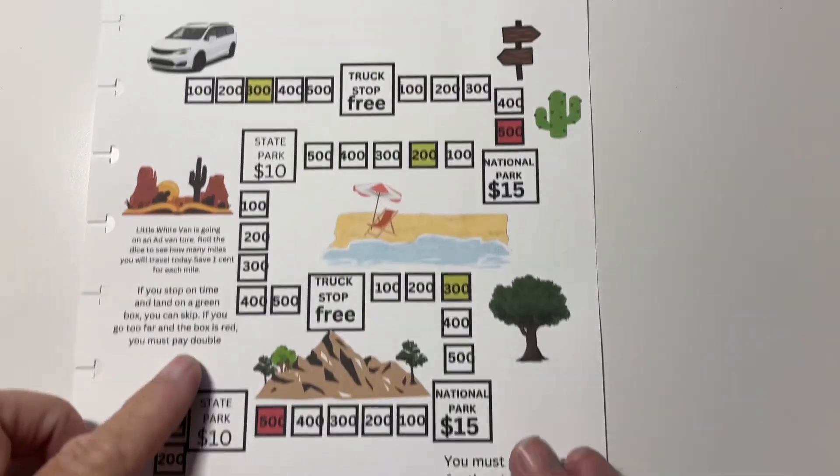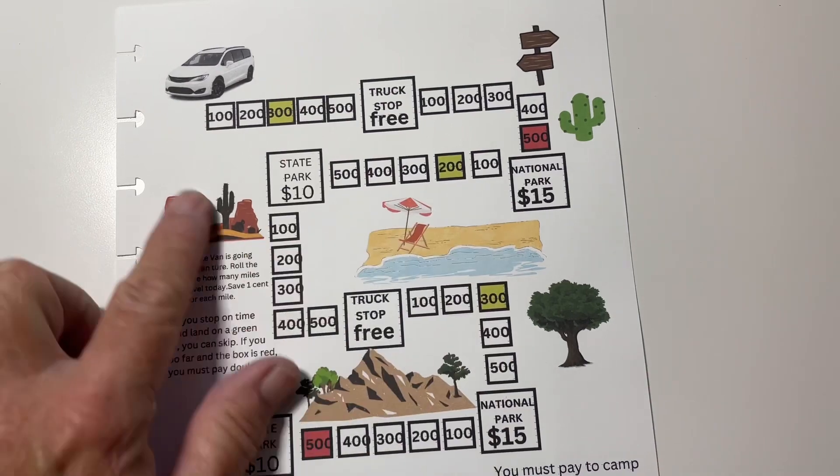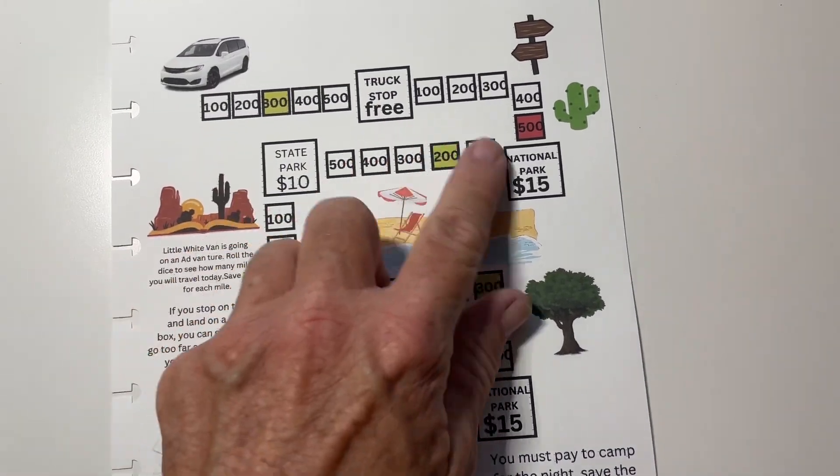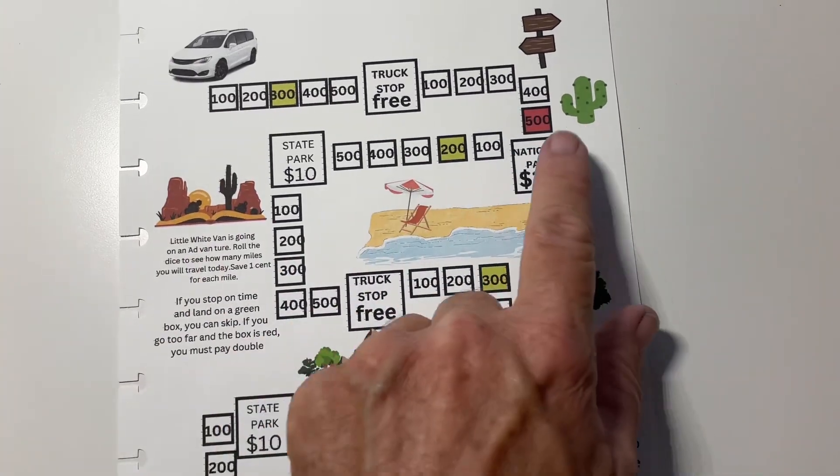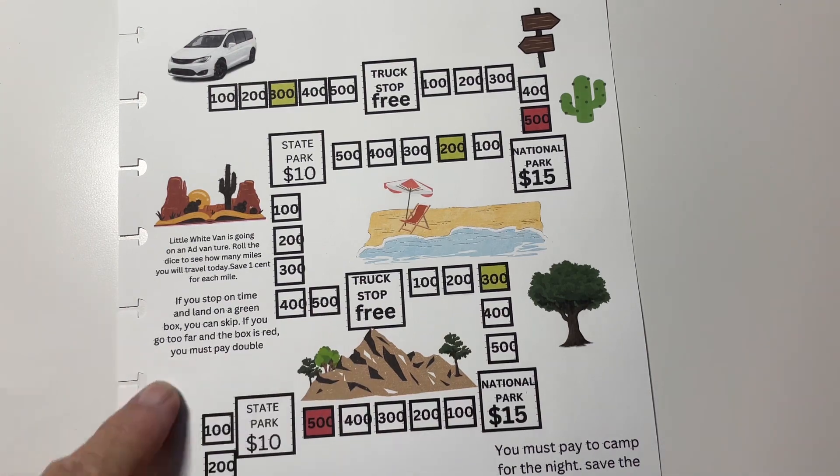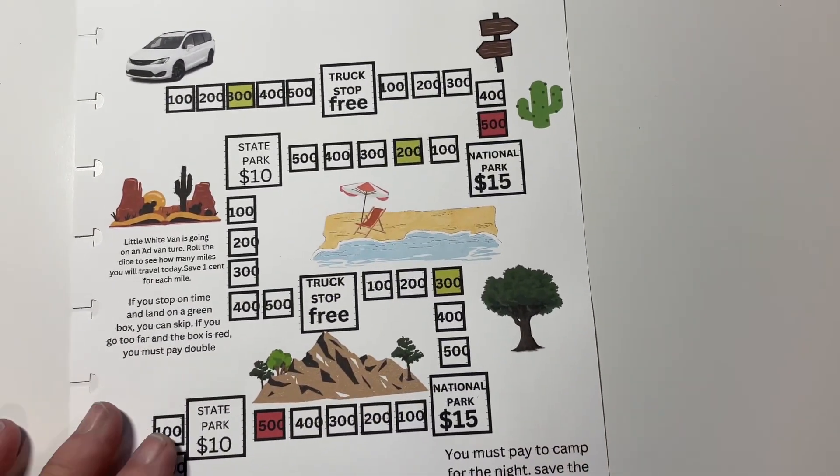And I would like you to come along with me. Let me zoom in. So little white van starts out on her trip and you're going to roll the dice and you're going to see how many miles you go per day as you're going through the desert and then through to the beach and the forest and the mountains and back in the desert and everywhere that little white van is going to have an adventure.